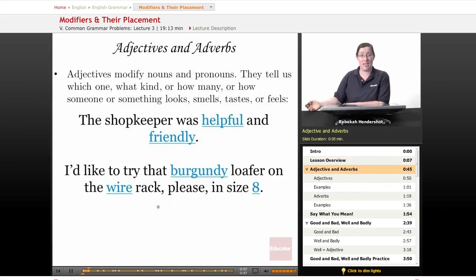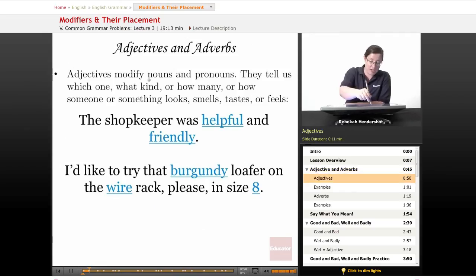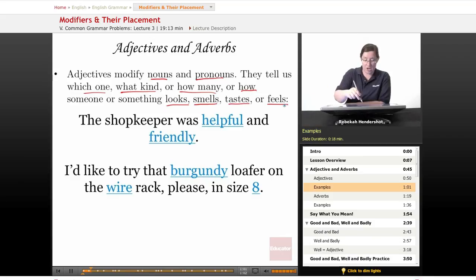Adjectives and adverbs. As you probably remember from our lessons on adjectives and adverbs, they modify nouns and pronouns. They tell us which one, what kind, or how many, or how someone or something looks, smells, tastes, or feels. For example, the shopkeeper was helpful and friendly. Both of these modify shopkeeper. I'd like to try that burgundy loafer. Burgundy modifies loafer on the wire rack, please, in size eight.